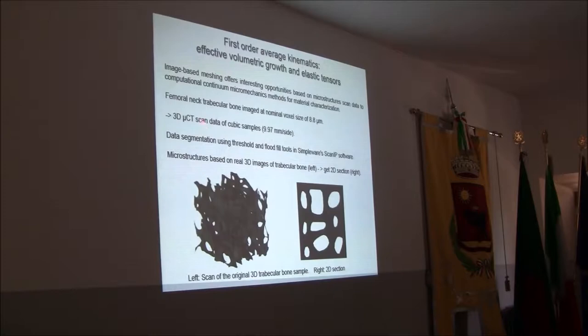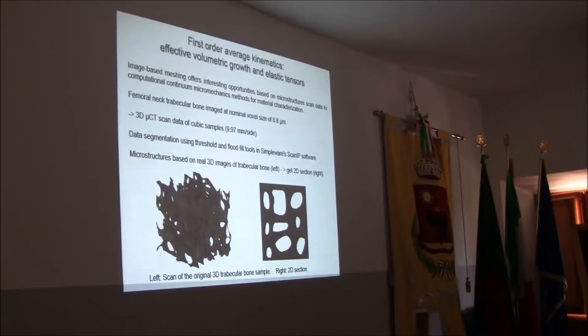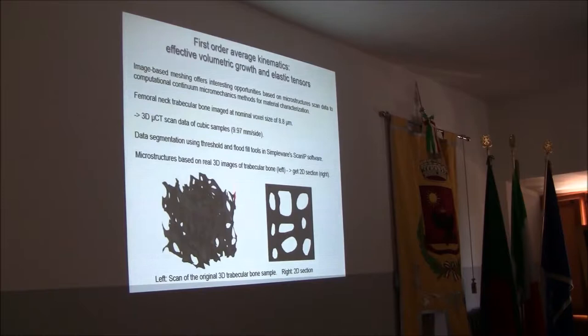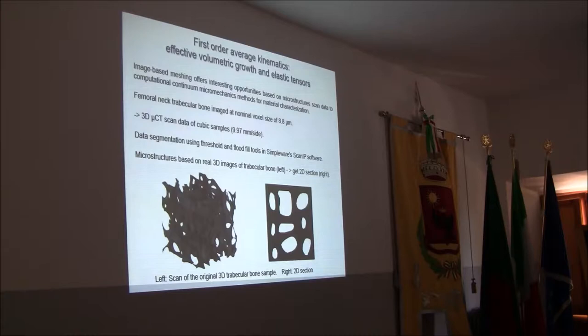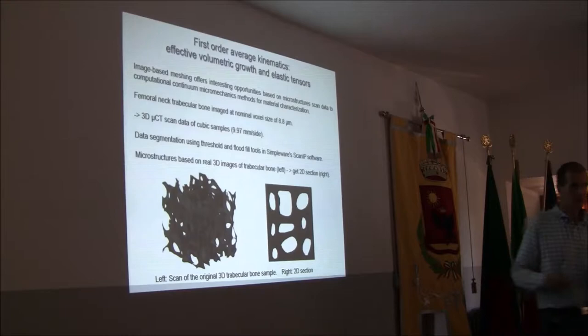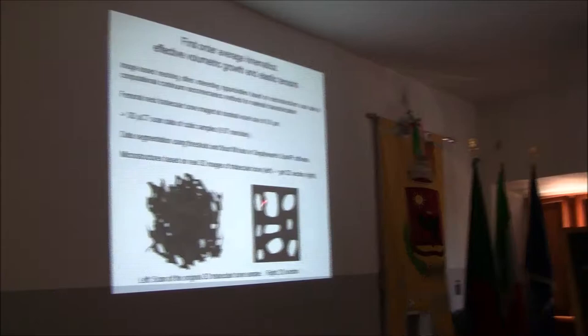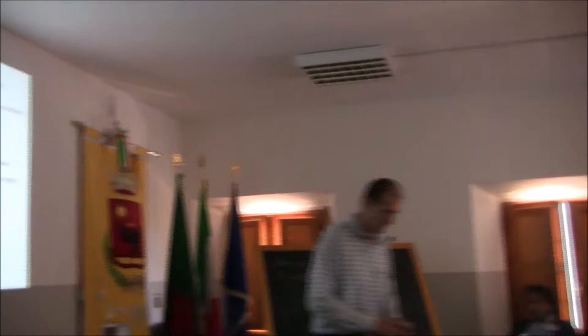We rely on 3D microCT scan data of cubic samples. The typical size is about 10 millimeters per side, and the typical voxel size is about 9 microns. With dedicated software, we perform data segmentation and produce a mesh of these microstructures. In this talk, I will only present 2D computations. We extracted from the original 3D view a 2D section and produced microstructures of different sizes — increasingly refined — including more and more cavities, in order to study possible size effects.